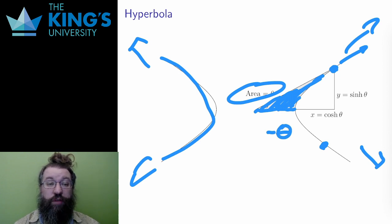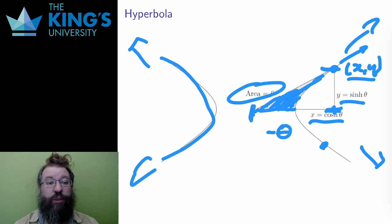So now I have a new notion of angle. This is called hyperbolic angle. Then, based on this hyperbolic angle, I can define the hyperbolic functions. Hyperbolic cosine, pronounced cosh, is the x-coordinate of the point as a function of the angle. And hyperbolic sine, pronounced sinh, is the y-coordinate.